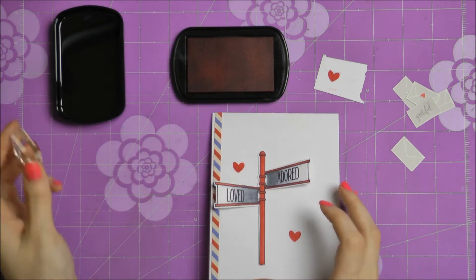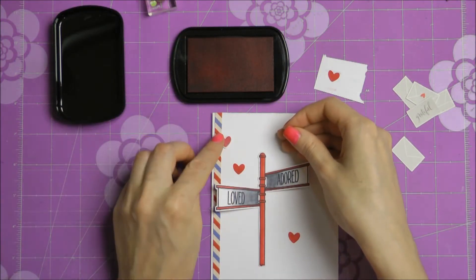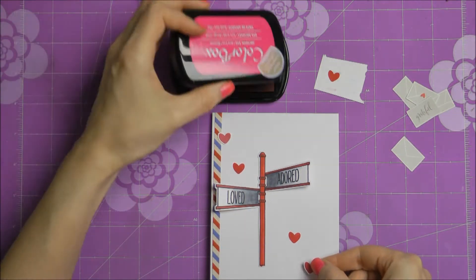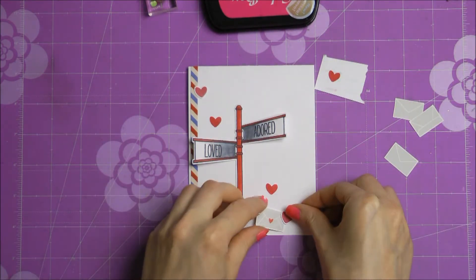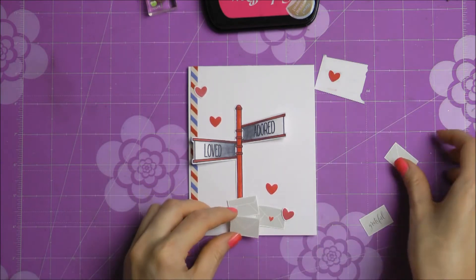Now to continue my card I used some liquid glue and I adhered my street sign directly onto my card base. This is just some white regular cardstock. I then used a little heart stamp from the Just Thinking of You stamp set from Neat and Tangled and I stamped that little heart using some red dye ink from Clear Snap.